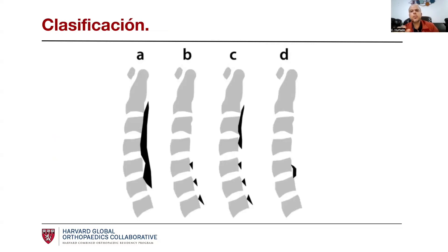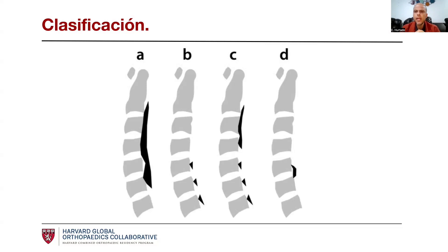En cuanto a la clasificación, existen cuatro tipos de esta osificación. El tipo A es una osificación continua de la estructura. El tipo B se llama segmentaria, propiamente en la parte posterior de los cuerpos vertebrales. El tipo C es la mixta que asocia a las primeras dos. Y el tipo D es local y normalmente se empieza a osificar solo detrás de algunos de los discos.